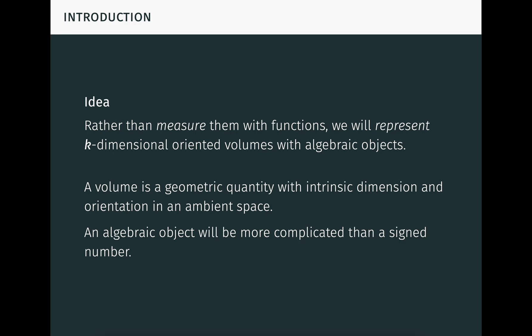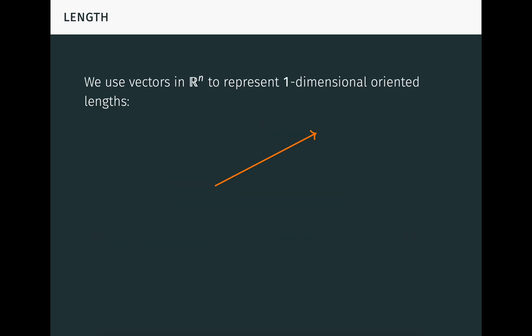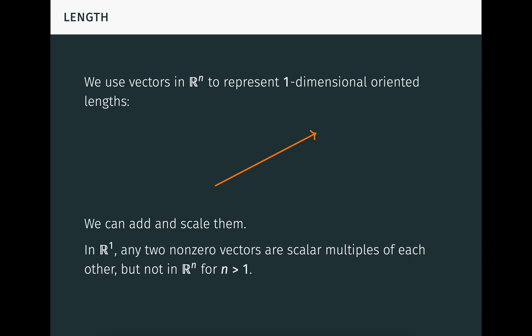To wrap our heads around this, we'll start with the one-dimensional case. We use vectors in Rⁿ to represent one-dimensional oriented lengths. We can add and scale them using the vector space operations. Importantly, in this representation we're thinking of an oriented length as an oriented line segment, and ignoring its position in the ambient space. Any two lengths of the same magnitude which are parallel and oriented in the same direction are considered equal. You can also think of all of them as being positioned with their tails at the origin. While the oriented lengths are intrinsically one-dimensional, the ambient space need not be. However, the dimension of the ambient space matters. For example, in R1, any two non-zero vectors are scalar multiples of each other — that is, they're parallel. But of course, that's not true in Rⁿ for n greater than 1.